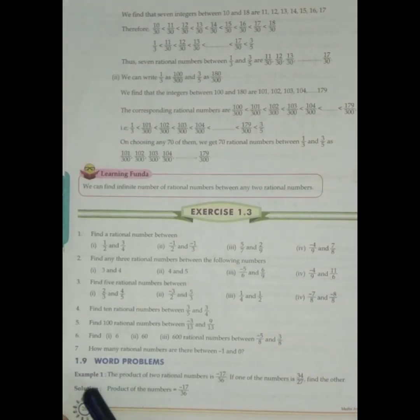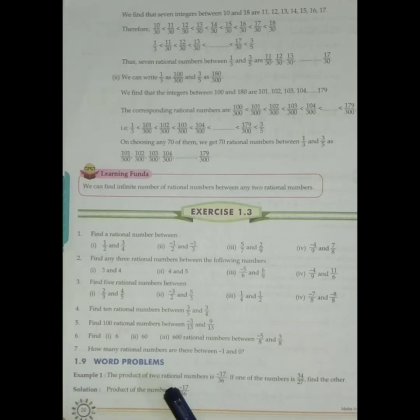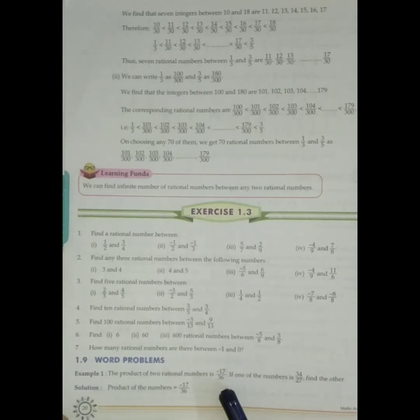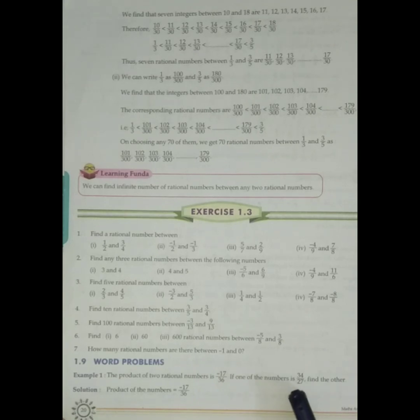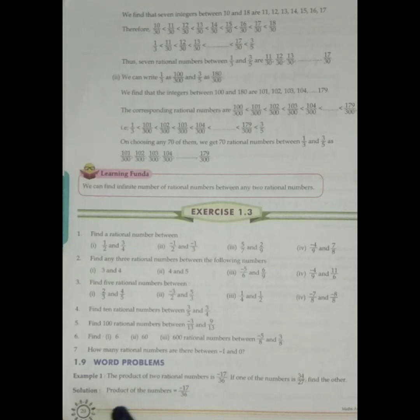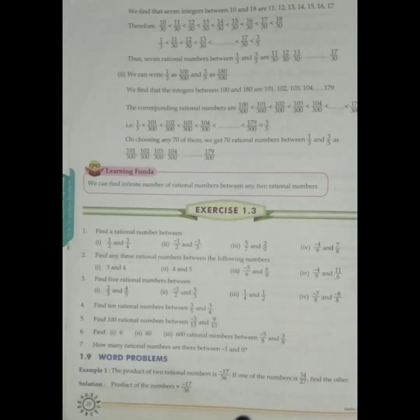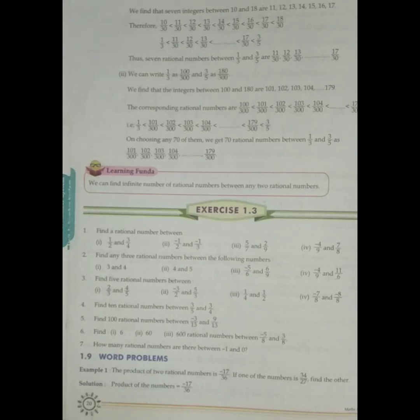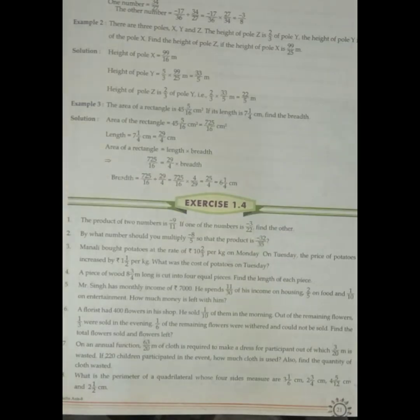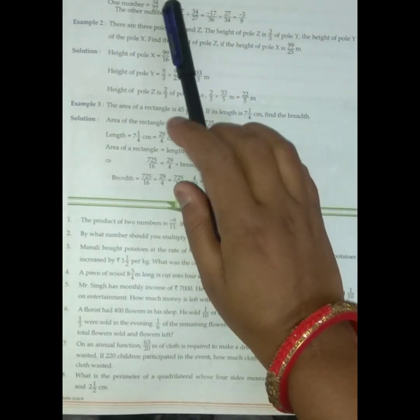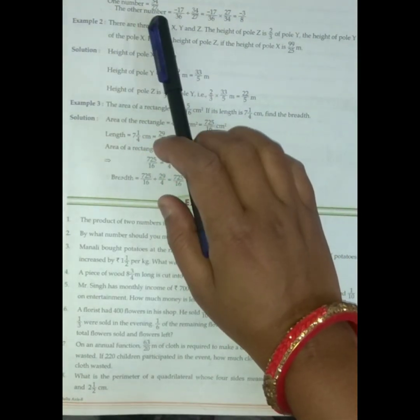See, this is an example of a word problem. The product of two rational numbers is minus 17 by 36. If one of the numbers is 34 by 27, we have to find the other. So as we know, the product of the numbers is this one.